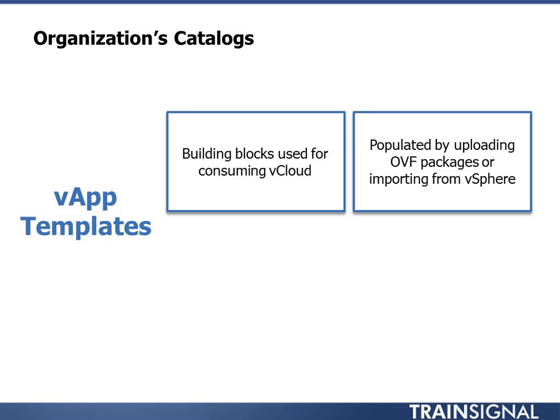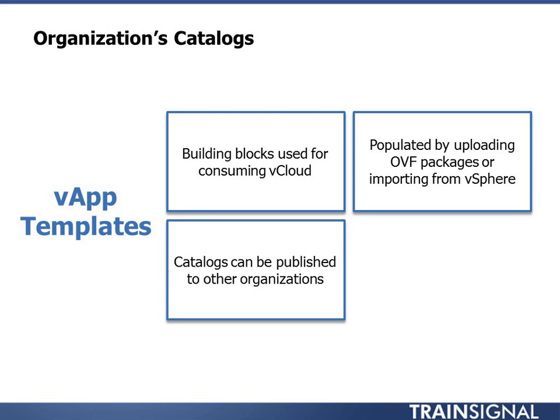Importing directly from vSphere is a good migration path. It's a way you can take existing virtual machines or workloads and import them directly from vSphere into your vCloud environment. Catalogs can be published to other organizations, so depending on whether a catalog is private to your organization or public to all organizations, you want to be considerate about what vApps you put in the catalog, because those templates could potentially be used by other organizations.